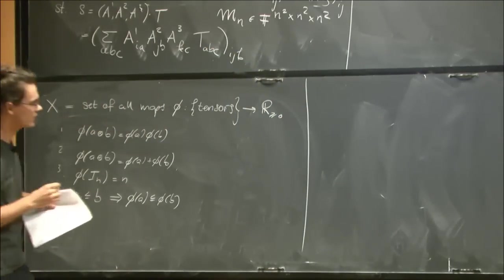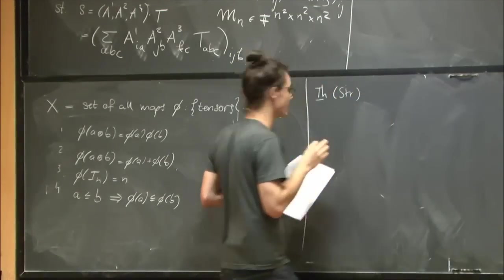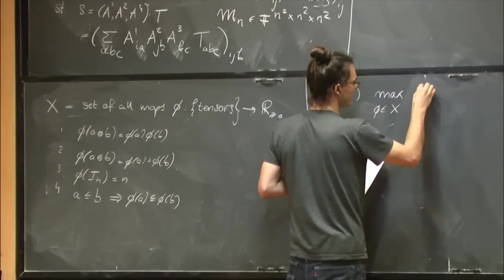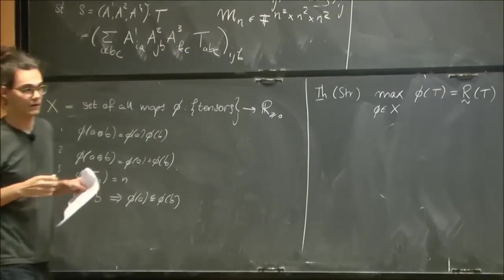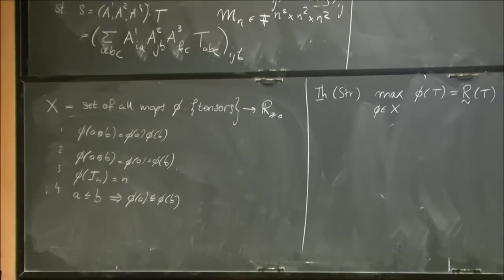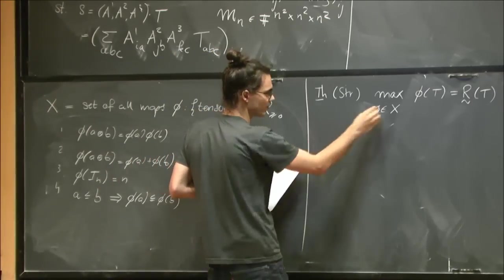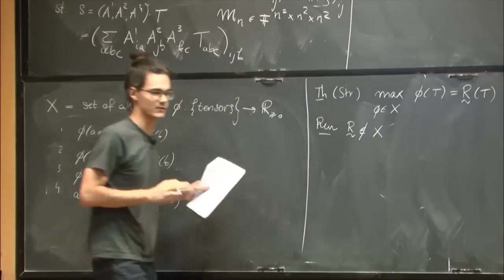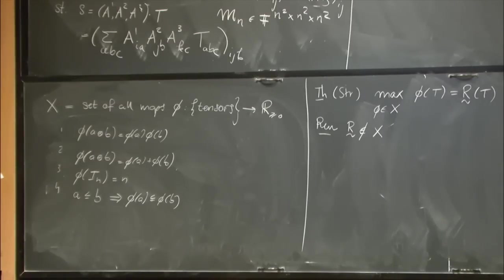And so X is the set of all these maps. So what's the point of studying this? So Strassen proved, so this is the theorem of Strassen. If you fix the tensor t and you maximize over all elements in X, phi evaluated at t, then you get the asymptotic tensor rank of t. And so we can try to study asymptotic tensor rank by studying X. So now our new goal is to learn what X is. And what's important here in this theorem is that the asymptotic rank itself is not an element of X. Just a remark. Are there any easy examples of elements of X that I can think of? Yeah, I'm going to give you now three.